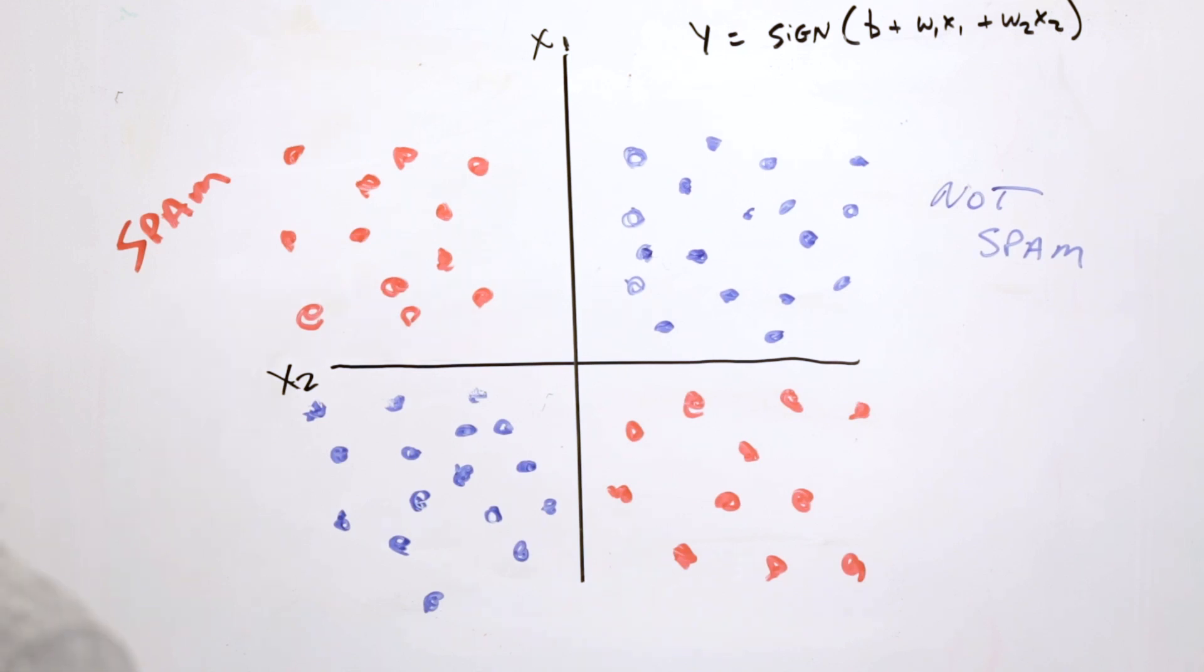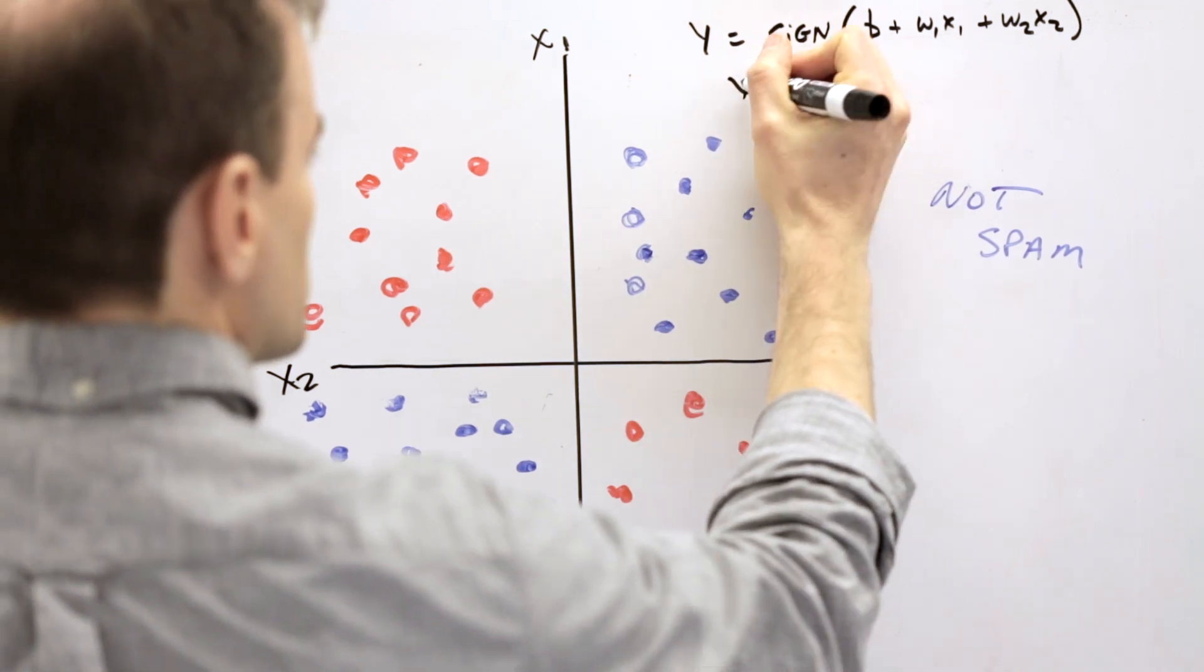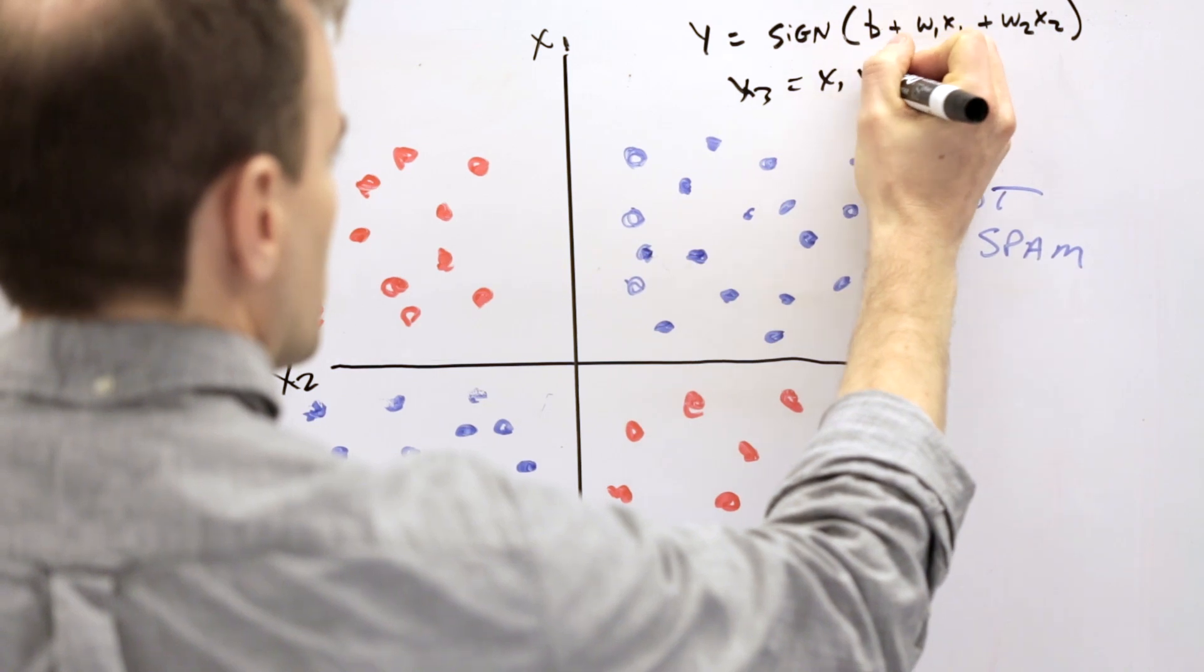Well, one clever idea is that we could define an additional feature. We're going to call this a synthetic feature, or a feature cross. We're going to do it like this. We're going to call it x3, and we're going to define x3 as the product of x1 and x2.